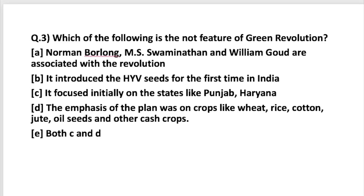The next question: which of the following is NOT a feature of the Green Revolution? This is a very important question. The Green Revolution started around 1965. Norman Borlaug, M.S. Swaminathan, and William Gaud are associated with the revolution — this is absolutely correct. M.S. Swaminathan is known as the father of the Green Revolution in India. The next statement — that it introduced High Yield Variety (HYV) seeds for the first time in India — is also correct.